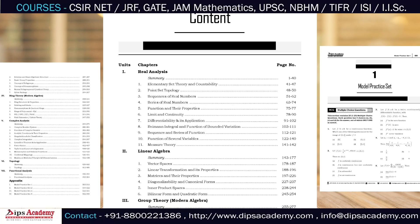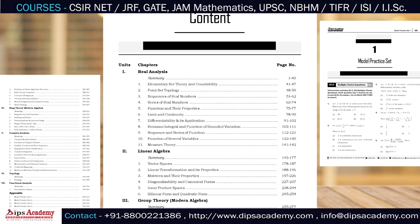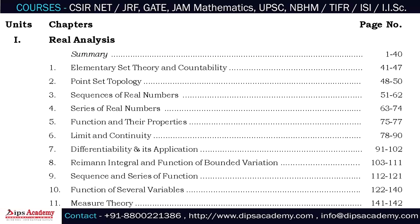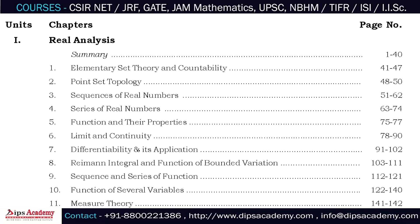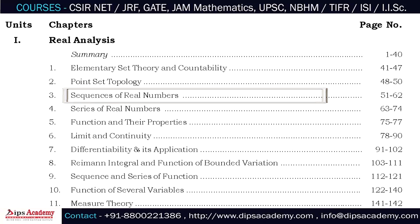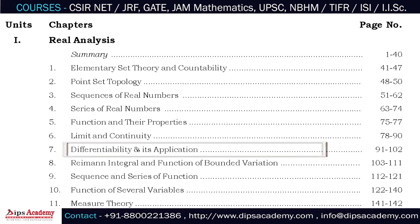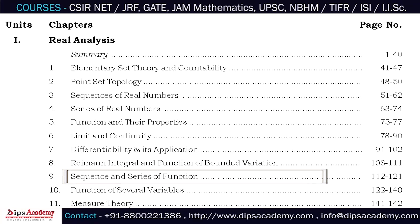This is the bifurcation of the question paper. The first chapter is Real Analysis, which begins with a summary covering elementary set theory and countability, followed by questions on point set topology, sequences of real numbers, series of real numbers, functions and their properties, limit and continuity, differentiability and its applications, Riemann integral and functions of bounded variation, sequences and series of functions, functions of several variables, and measure theory.